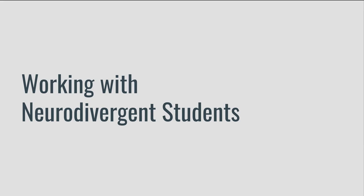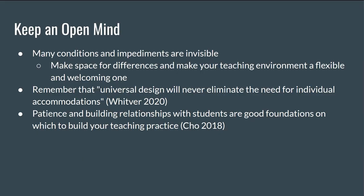With a base knowledge of UDL in mind, I wanted to share some specific tips from the literature on working with neurodivergent students. The most important piece of advice I can give is to keep an open mind — keep questioning established practices and structures, keep thinking of new ways you can support your students, and keep learning and engaging with those around you. Many conditions and impairments are invisible, and you can never make assumptions about what a disabled student's needs will be. Make space for differences and make your teaching environment a flexible and welcoming one.